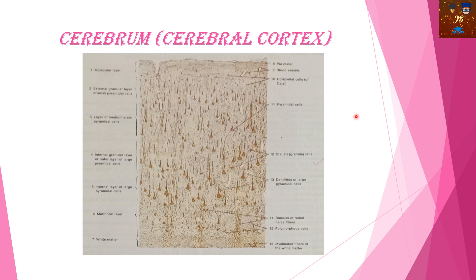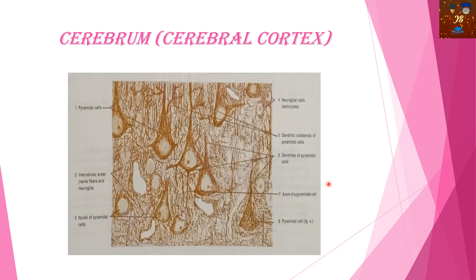Now, for the cerebrum or cerebral cortex — you can see dotted cells highlighted here; these are called pyramidal cells. In the cerebellum we have Purkinje cells; in the cerebrum we get pyramidal cells. Pyramidal cells are the main identifying feature for the cerebrum or cerebral cortex. This is how the pyramidal cells actually look — like a pyramid.